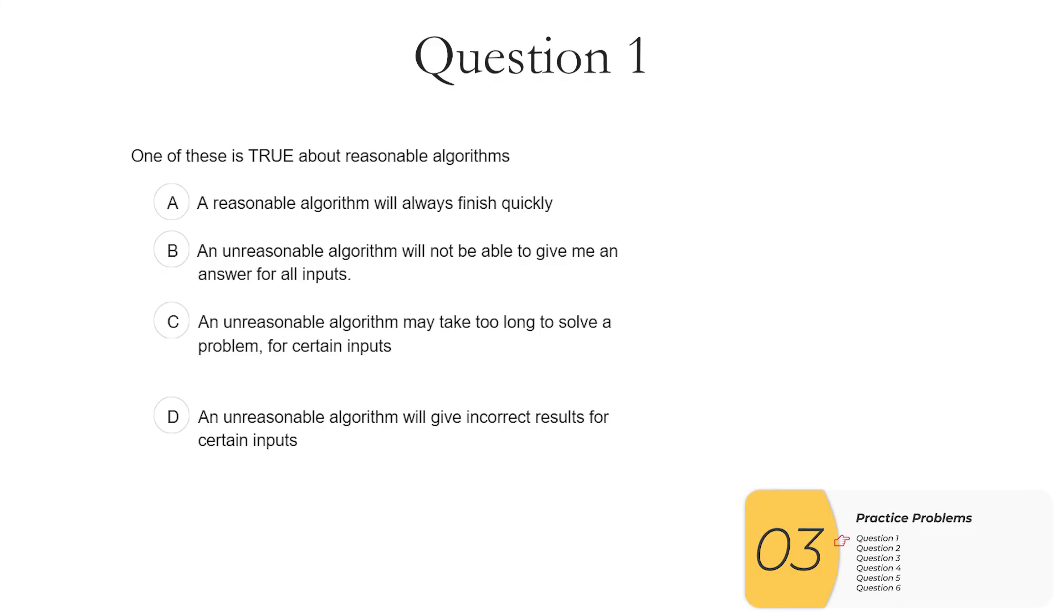All right, practice questions. Question one: one of these is true about reasonable algorithms. A, a reasonable algorithm will always finish quickly. This is not true. Reasonable just has to do with how it scales when you add more items. That is, when you add more items, it doesn't get too much worse. But it might be really, really slow to begin with, in which case it would finish slowly. B, an unreasonable algorithm will not be able to give me an answer for all inputs. This is not true. This is something called not decidable, and you'll see this later on. C, an unreasonable algorithm may take too long to solve a problem for certain inputs. So this is what you just saw. This is true. This is the answer. Basically, as you get to bigger and bigger and bigger inputs, it doesn't respond well to this. It slows down a lot the more items I have to deal with. So this is basically the definition of a reasonable algorithm. D, an unreasonable algorithm will give incorrect results for certain inputs. This is not unreasonable. Again, reasonable has to do with scaling. This hypothetical algorithm might make some assumptions that are not true, or maybe it's just really, really bad. But it doesn't have to do with scaling. And so it doesn't have to do with reasonable or unreasonable.